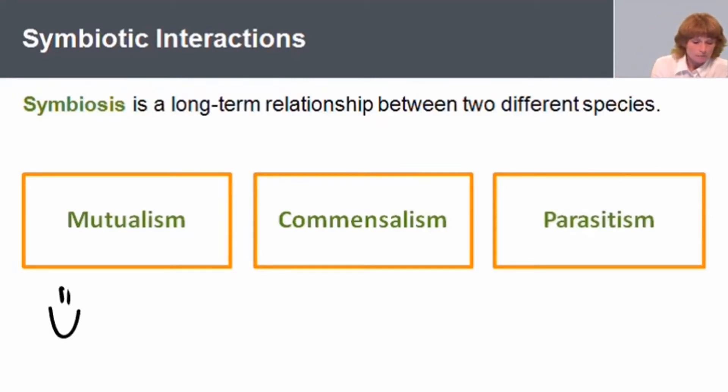And within the instructional portions of the lessons, students are given clear definitions and explanations for the academic language they'll need to know to understand the content. In commensualism, one species benefits and the other species neither is harmed nor benefits.